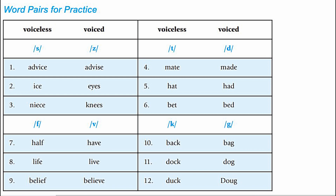Ice, eyes. Niece, knees. T and D pairs: mate, maid. Hat, had. Bet, bed.